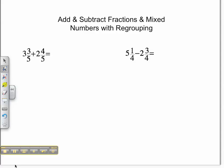So let's see, our first problem, we've got 3 and 3/5 plus 2 and 4/5. So I always add my fractions first. So I have 3/5 plus 4/5. I know my denominator stays the same. 3 plus 4 is 7.